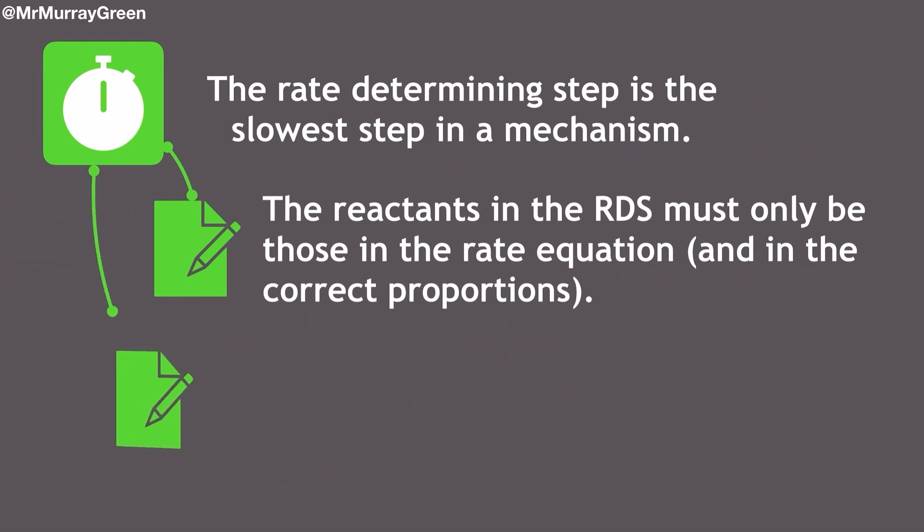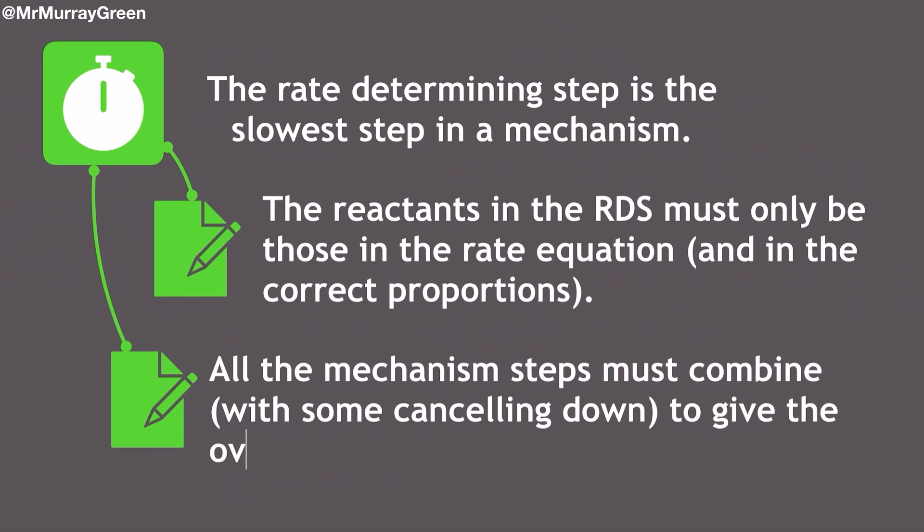What else do I need to know about my mechanism steps? All the mechanism steps, including the rate determining step, must combine together, that means all the left-hand sides become one left-hand side and all the right-hand sides become one big right-hand side with a bit of cancelling down to give the overall reaction equation. Now, these two are the really important bits of information that you need to know about the rate determining step theory that are going to help you from one question to the next.